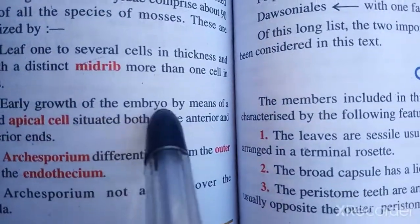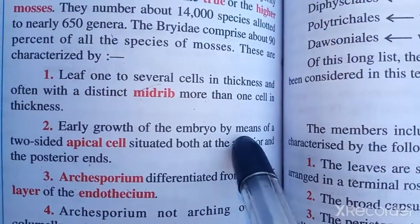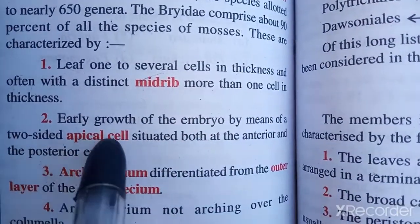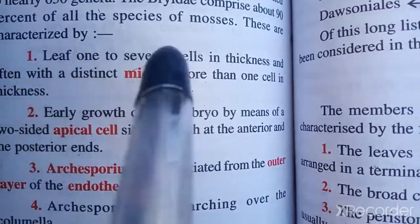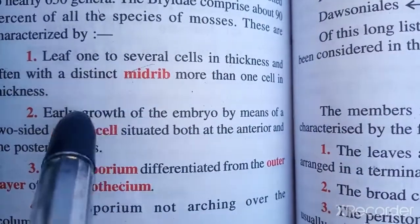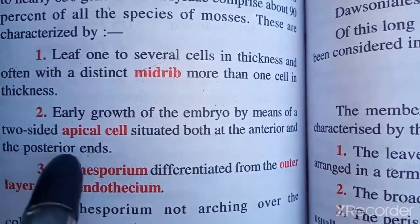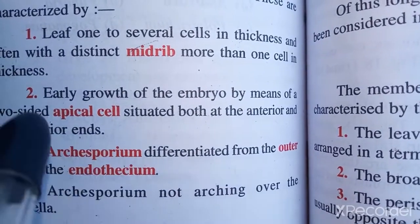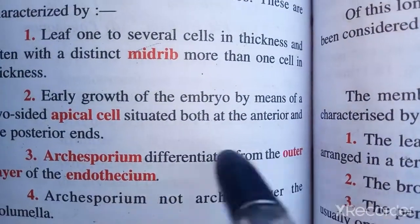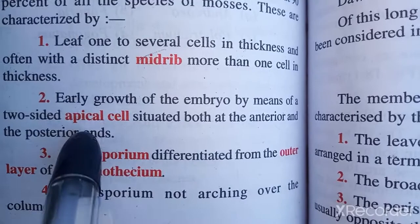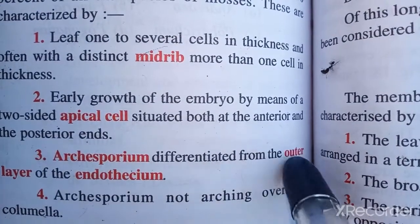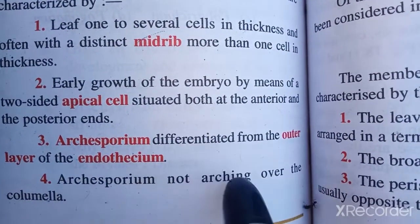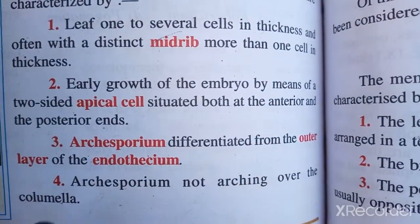Early growth of the embryo occurs by means of two-sided apical growth. Both anterior and posterior growth occur in the apical cell. The endothecium differentiates from the outer layer, and the archesporangium does not arch over the columella.